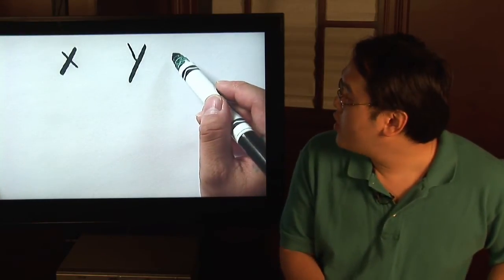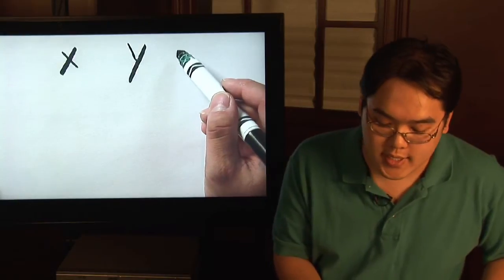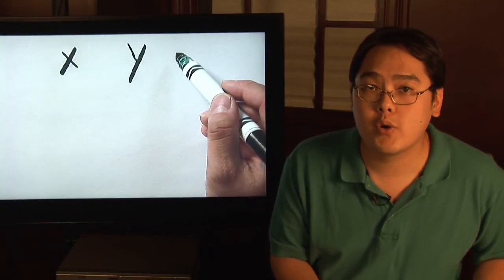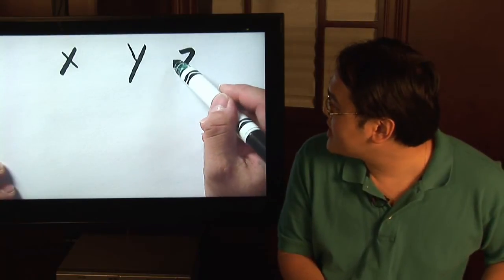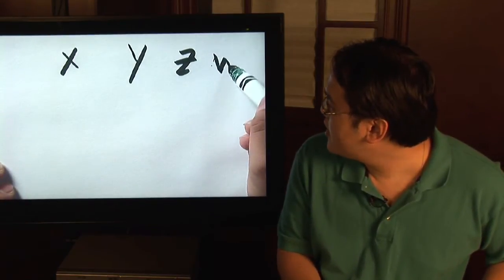The more variables you have, the more unknowns you get. X and y are the most commonly used, but occasionally you'll also see z and w.